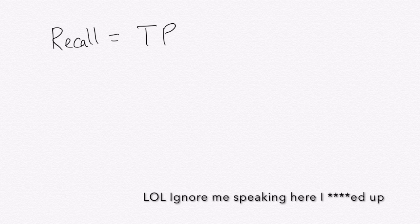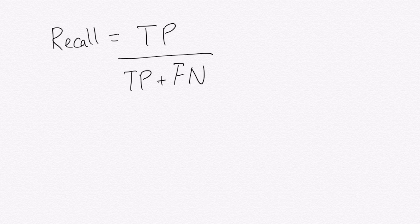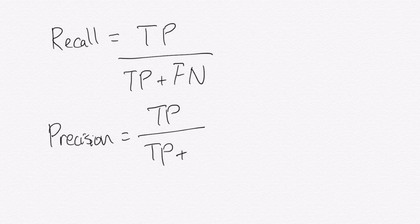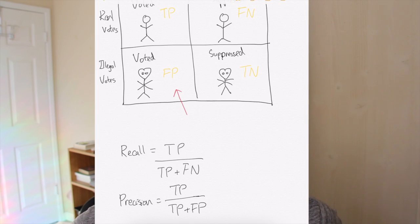Let's go back to the equations of precision and recall — how do they actually relate to what Democrats and Republicans want to optimize for? Recall is the number of true positives divided by the sum of false negatives plus true positives. Precision is the number of true positives divided by the sum of true positives plus false positives. This is why Republicans are interested in optimizing on precision — they want to minimize false positives, which is voter fraud, and bring it down to zero.